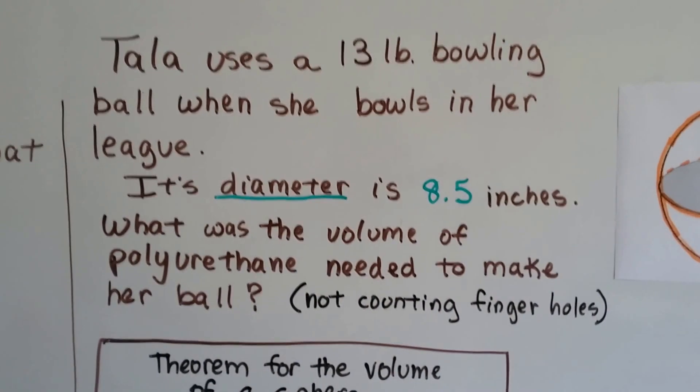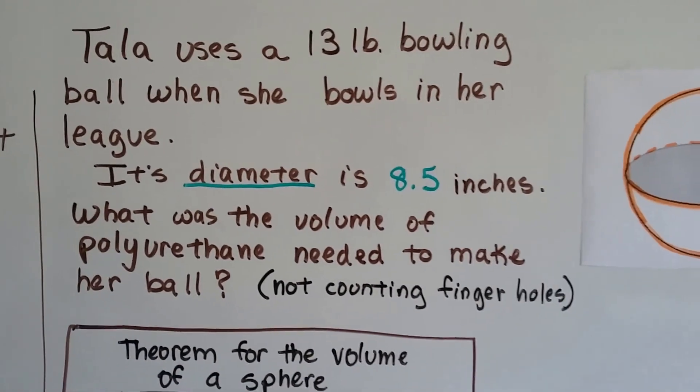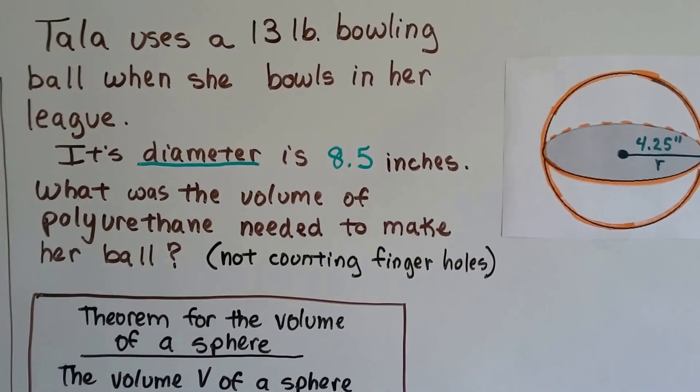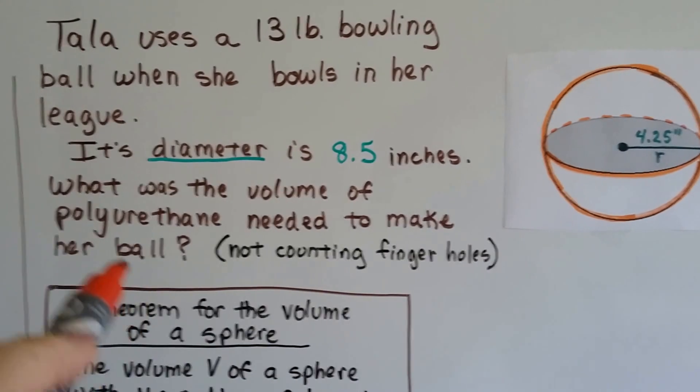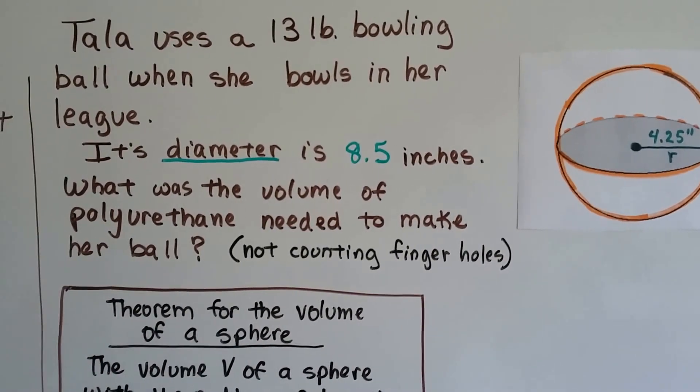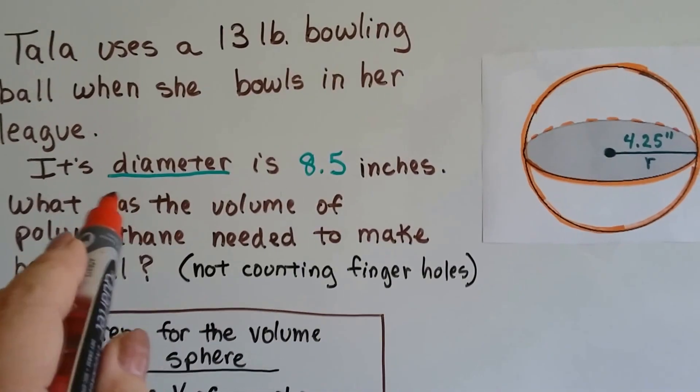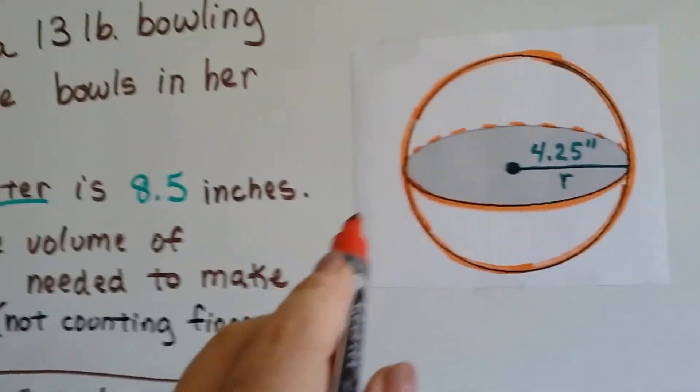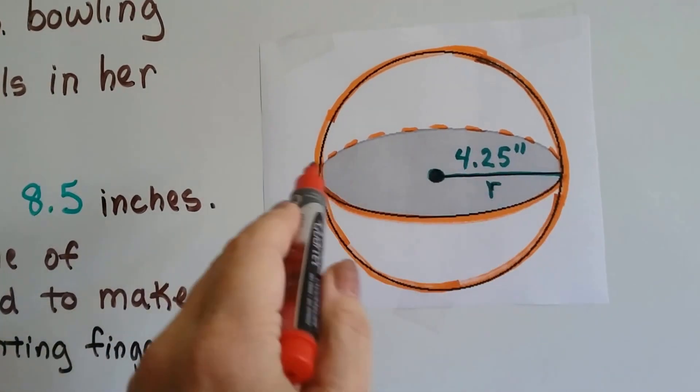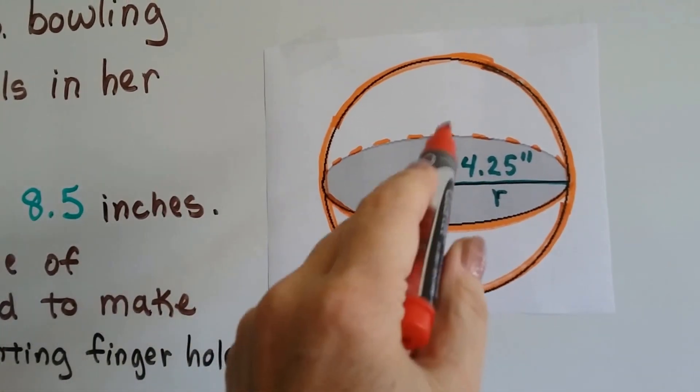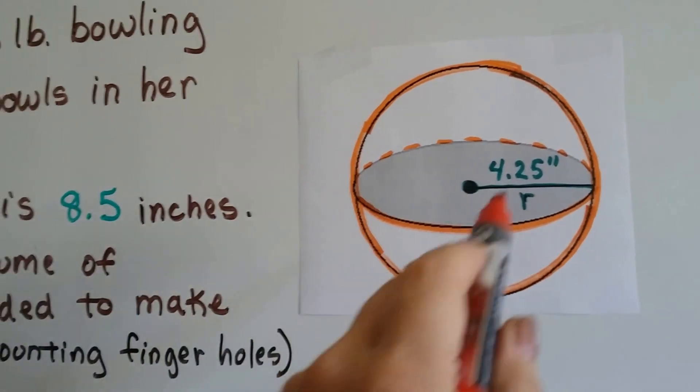Tala uses a 13-pound bowling ball when she bowls in her league, and its diameter is 8.5 inches. What was the volume of polyurethane needed to make her ball, not counting the finger holes? If the diameter is 8.5 inches, we just need half of that. Half of 8.5 is 4.25.